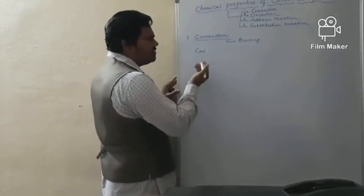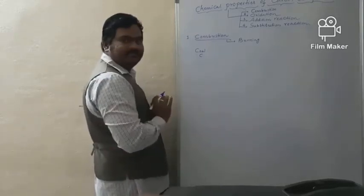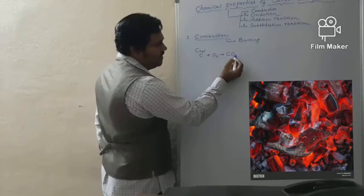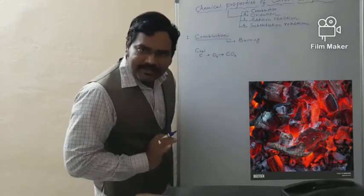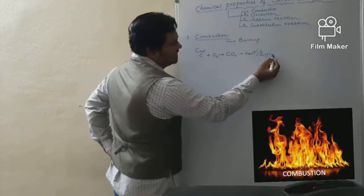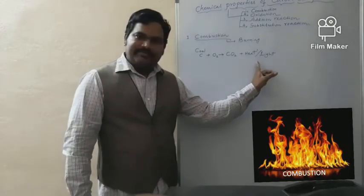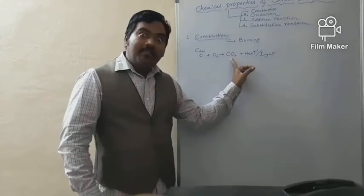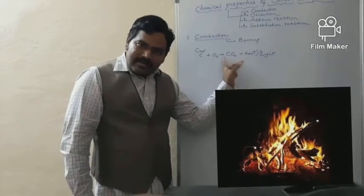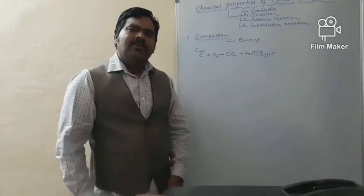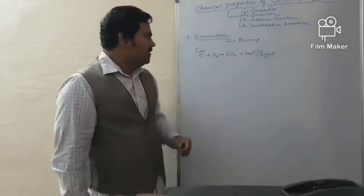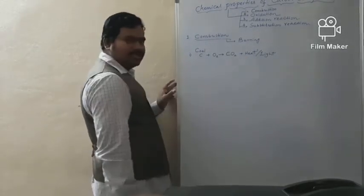This carbon in the form of coal burns in the presence of oxygen to produce carbon dioxide, along with a large amount of heat energy and light energy. Along with our purpose being served, there is a pollutant released into the atmosphere which causes greenhouse effect, global warming, and acid rain. So burning of fuels causes pollution.